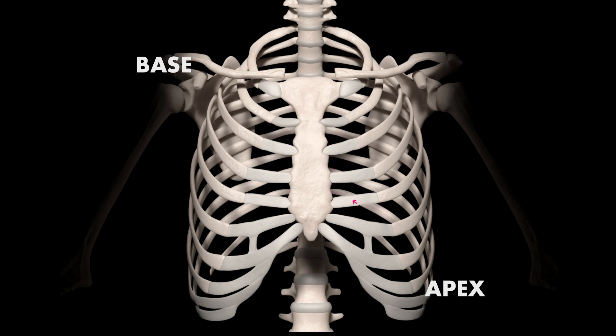You could also do this in the opposite direction, starting at the right second intercostal space, then across to the left second intercostal space, next down to the left lower sternal border, and finally to the apex — pausing and listening carefully at each auscultation point for normal and any abnormal sounds.